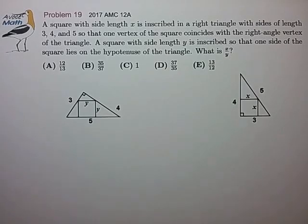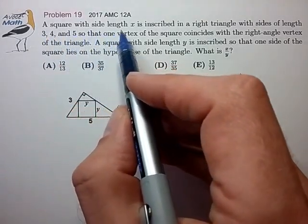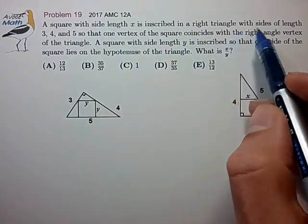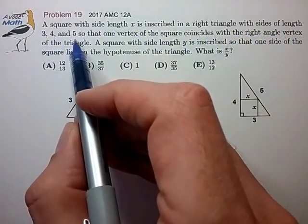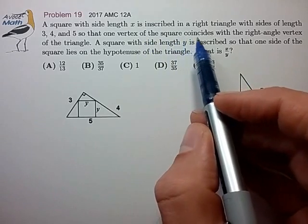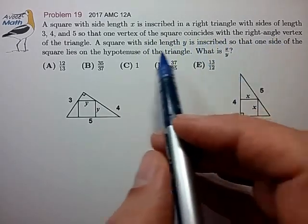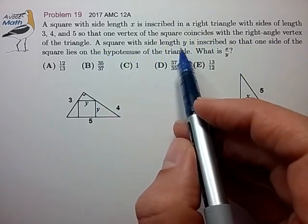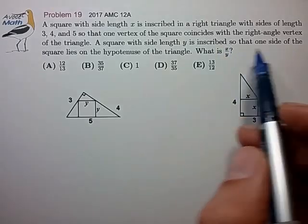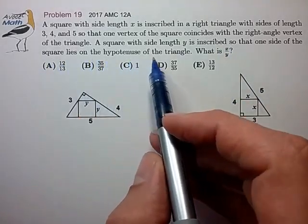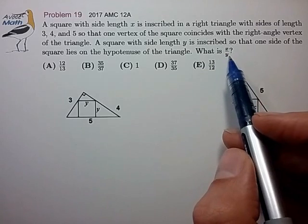Hi, this is problem 19 from the AMC 12A. A square with side length x is inscribed in a right triangle with sides of length 3, 4, and 5 so that one vertex of the square coincides with the right angle. A square with side length y is inscribed so that one side of the square lies on the hypotenuse of the triangle. What is the ratio of x to y?